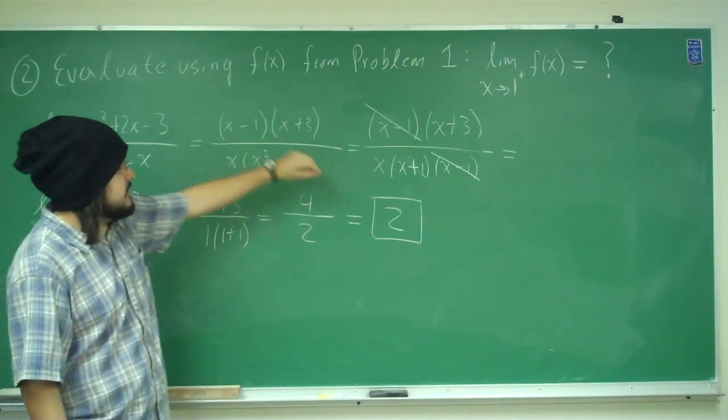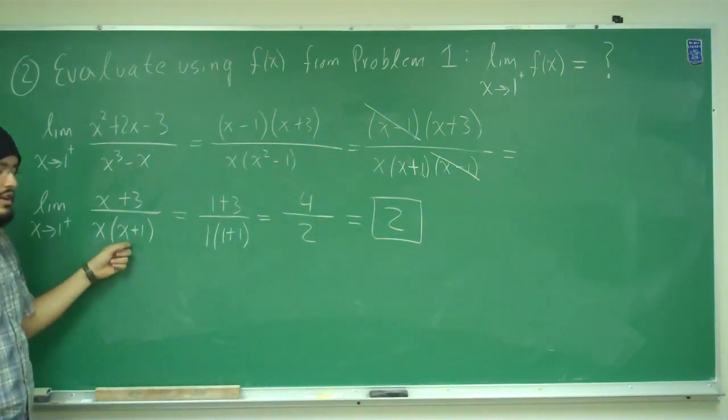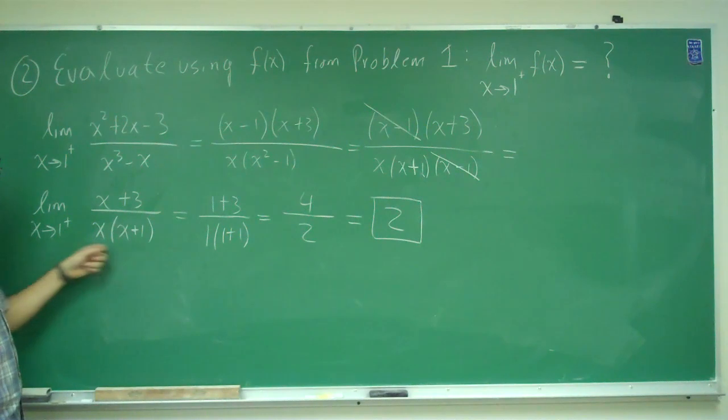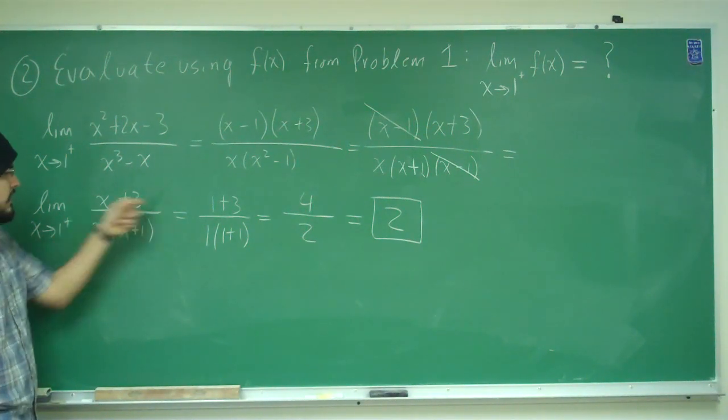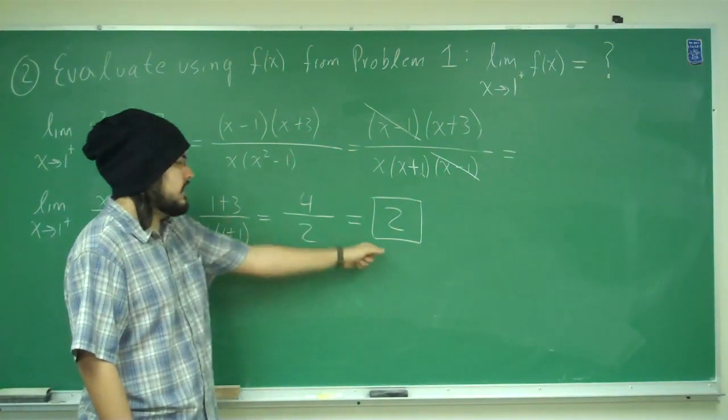So we went ahead and factored it, we canceled out the x minus 1, the x minus 1, we obtained this expression. So now with this expression, we went ahead and plugged in the 1. So we plug in the 1 here for the x's, we got 1 plus 3, 4, and 1 times 2, 2, we got 2.